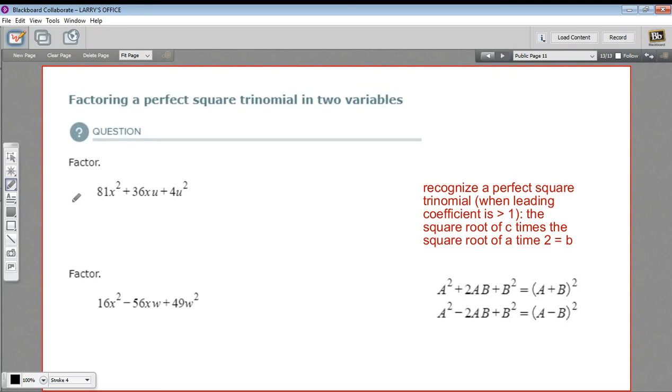In these problems, we are factoring perfect square trinomials in two variables. And if you've been factoring perfect square trinomials in one variable, this shouldn't be too much harder. We're going to apply the same pattern. This is basically a shortcut for factoring.